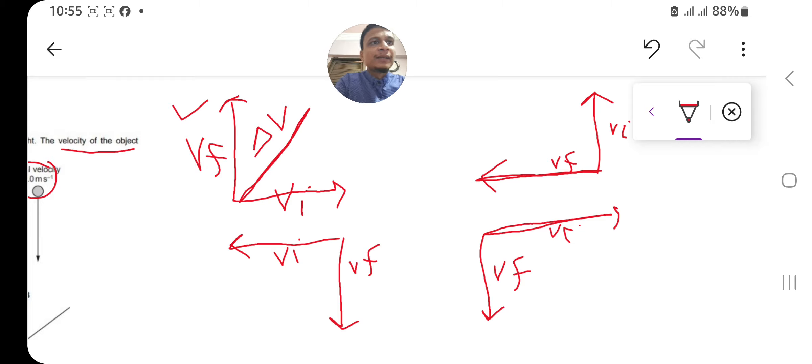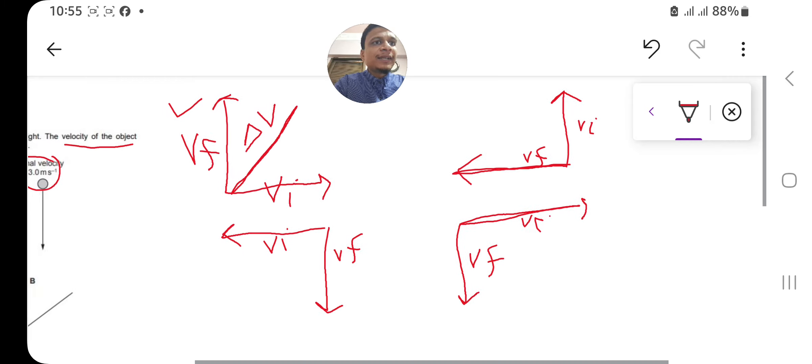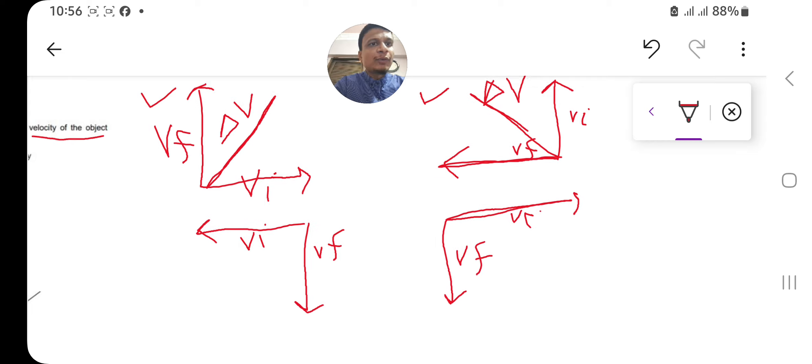Here also, whenever you have in this case Vi on the left and Vf downward, you have the change in velocity or the resultant velocity like this. In the fourth case, you have initial velocity on the right